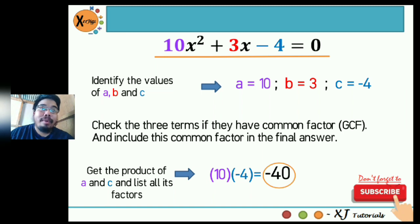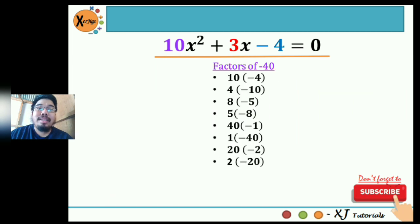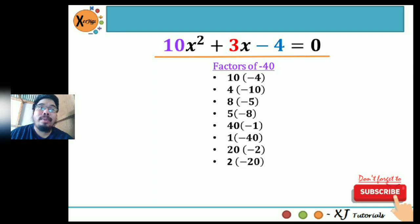Our c is negative 4 and our a is positive 10, so the product of negative 4 and 10 is negative 40. We need to list all the factors of negative 40. There are actually eight pairs: 10 and negative 4, 4 and negative 10, 8 and negative 5, 5 and negative 8, 40 and negative 1, 1 and negative 40, 20 and negative 2, and 2 and negative 20.